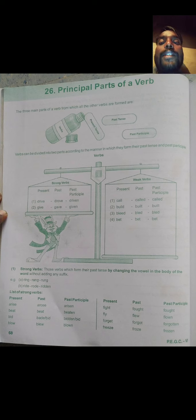Verbs can be divided into two parts according to the manner in which they form their past tense and past participle. According to the manner, a verb can be classified into two parts. What are those two parts? First one, strong verbs. Second one, weak verbs.